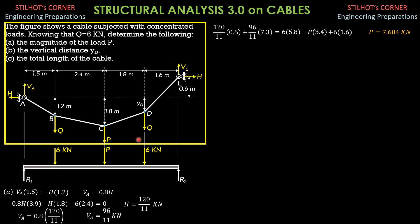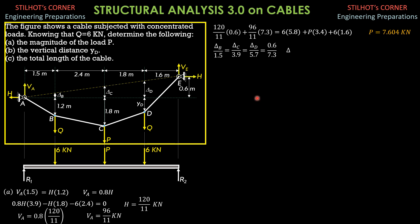For the general cable theorem approach, I'll draw an imaginary chord. We call the distance from the horizontal line through A to that imaginary chord as delta B, delta C at C, and delta D at D. By similar triangles: delta B over 1.5 equals delta C over 3.9 equals delta D over 5.7 equals 0.6 over 7.3. Delta B equals 9 over 73 meters, delta C equals 117 over 365 meters, and delta D equals 171 over 365 meters.